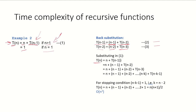We have T(n) = n + T(n-1). Putting the value of T(n-1), we get n + (n-1) + T(n-2). Now putting the value of T(n-2), we get n + (n-1) + (n-2) + T(n-3). If we generalize this, we get n + (n-1) + (n-2) + ... and at the k-th iteration, n-k + T(n-k-1).